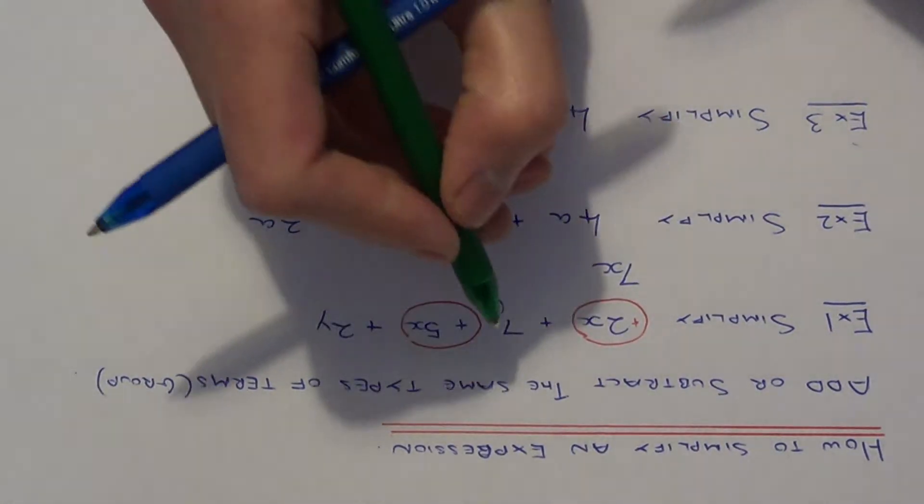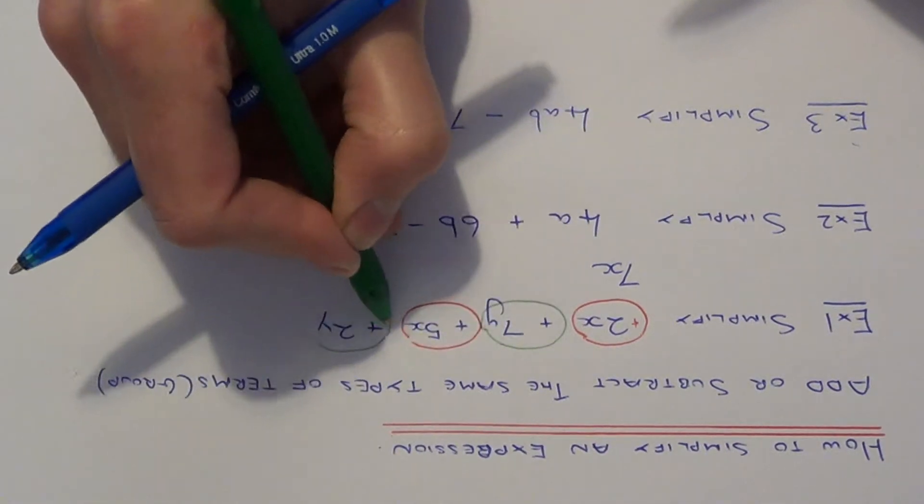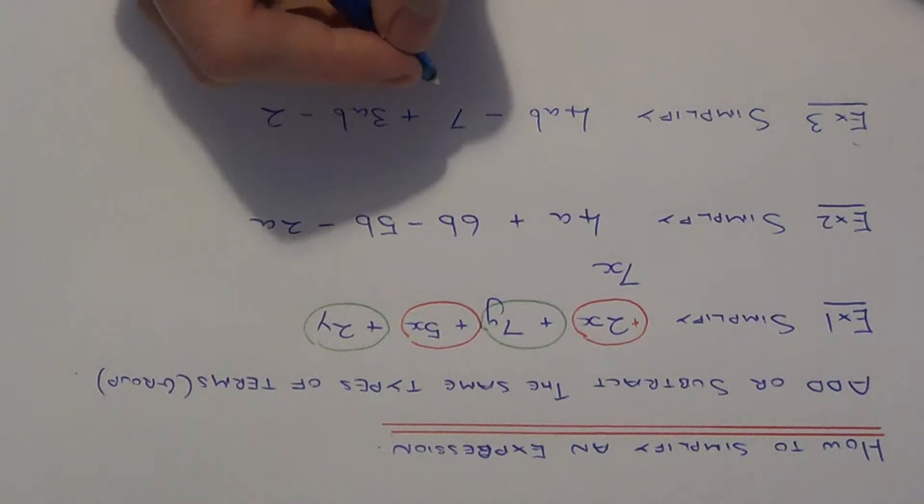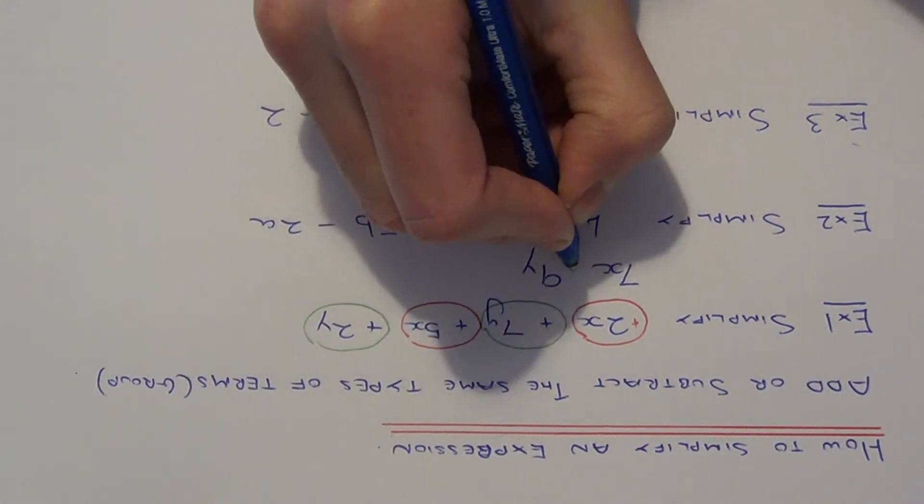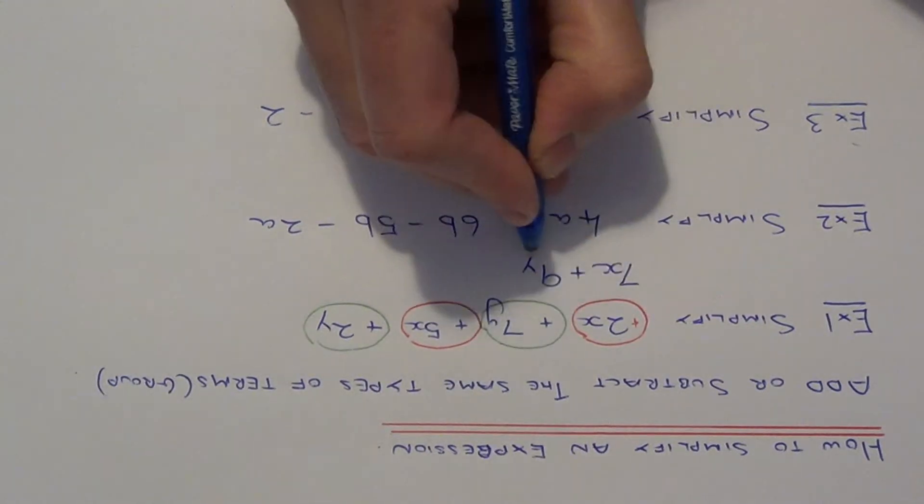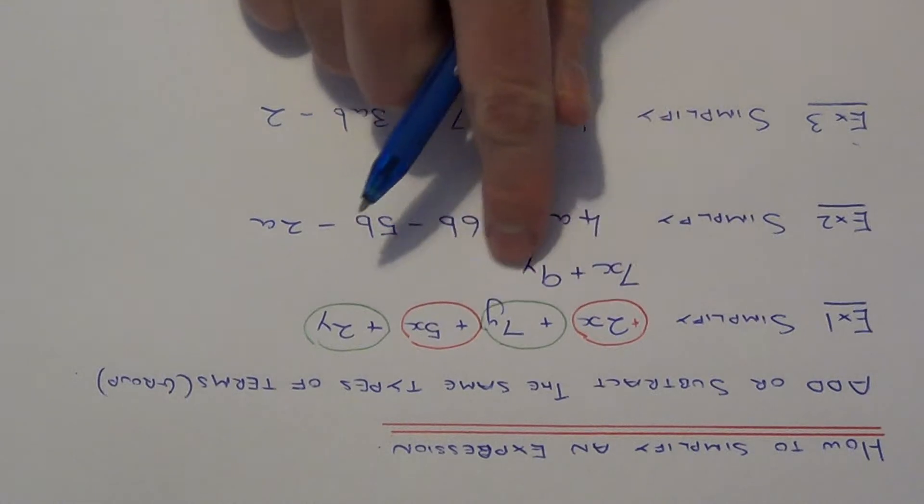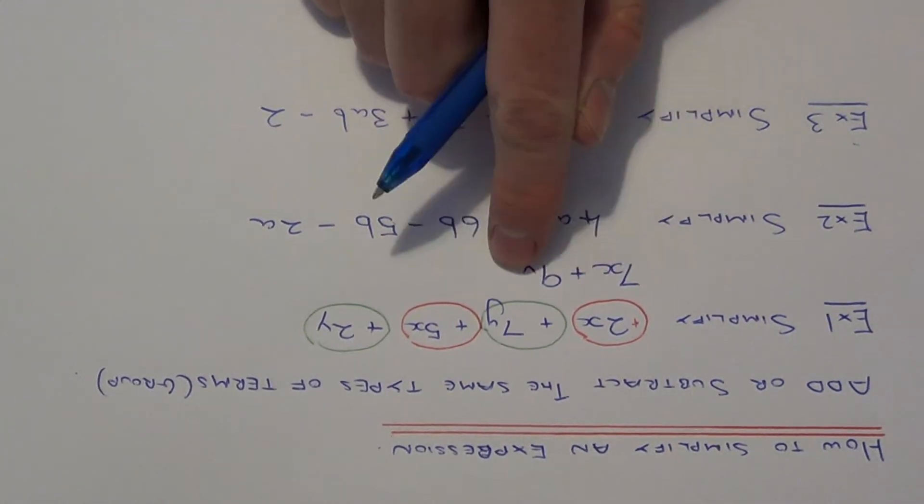Let's circle the y terms in a different color. So we've got plus 7y plus 2y. So 7y add 2y gives 9y. Also make sure you put a plus in between the terms, because the 9y was positive. So this cannot be simplified any further, because these are different types of terms.